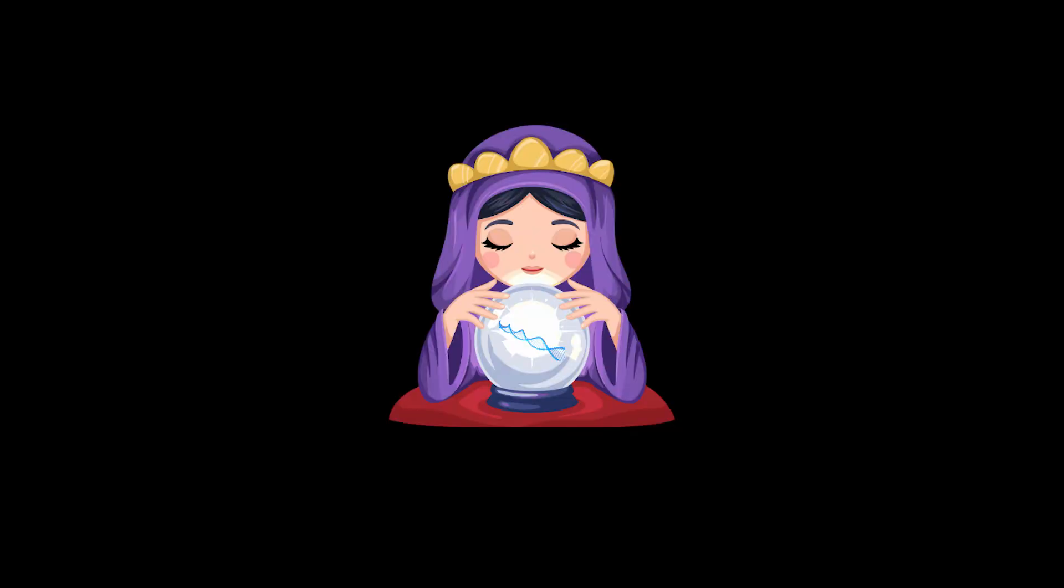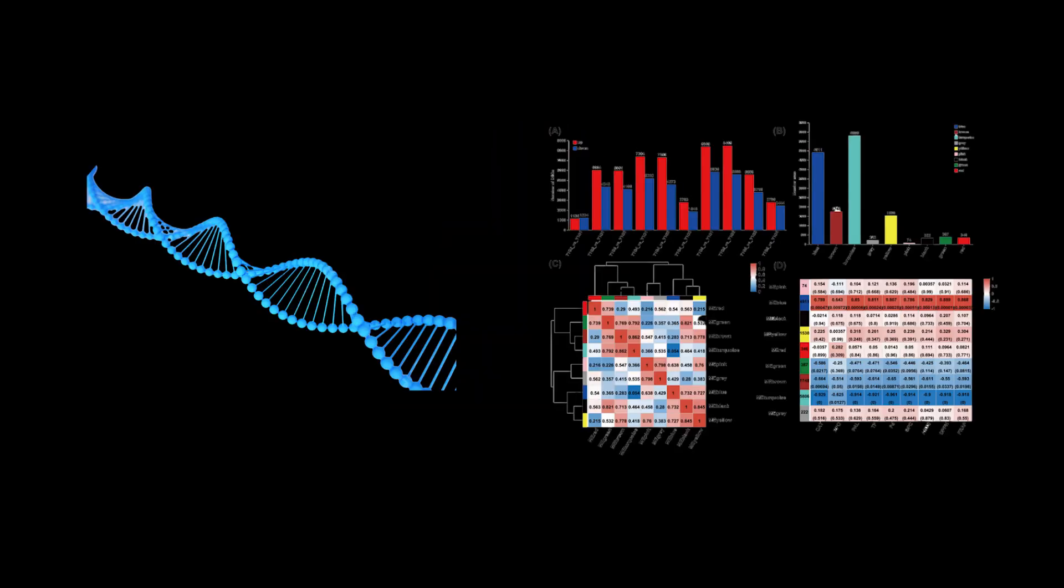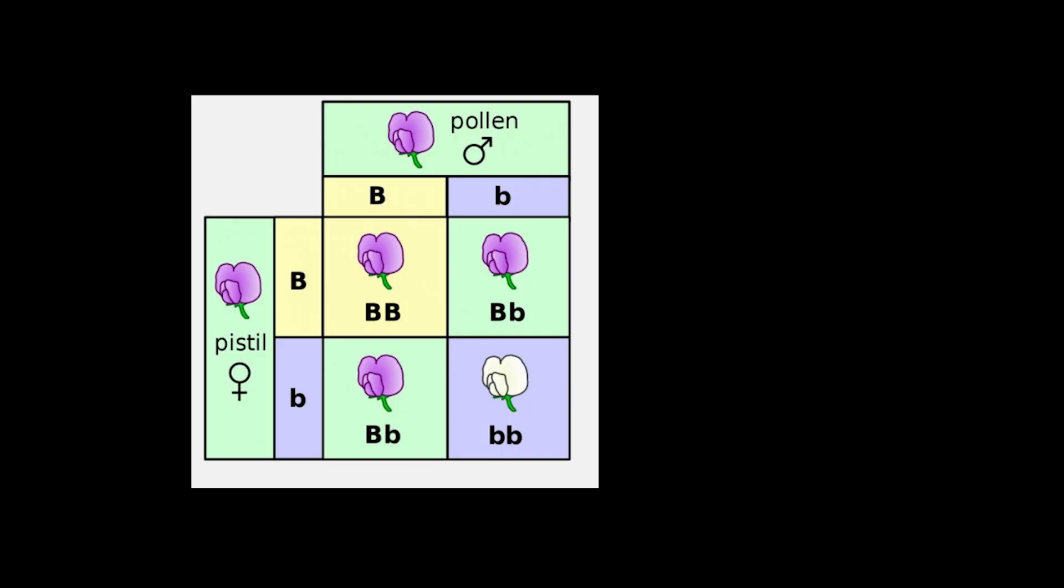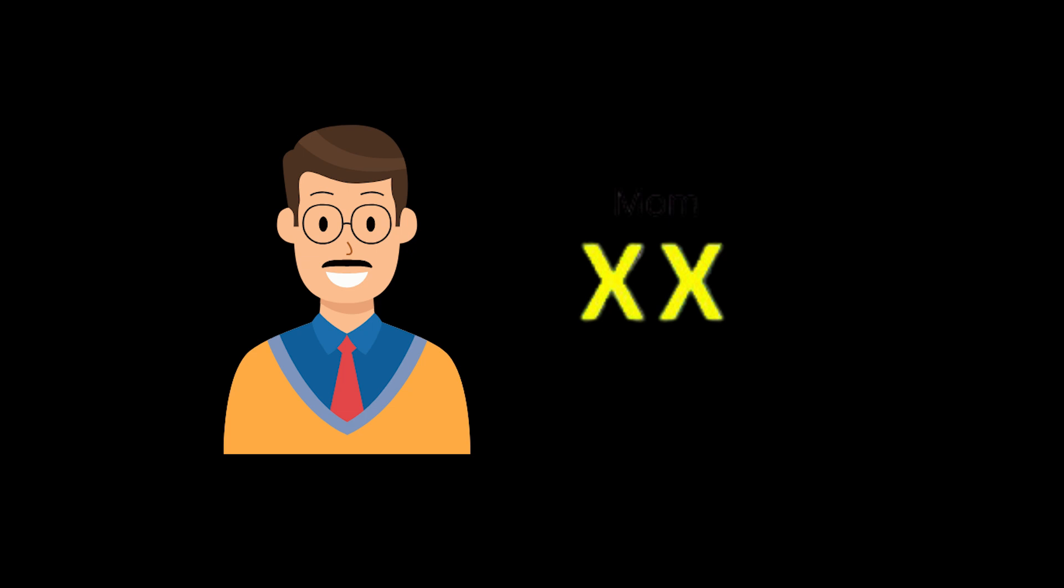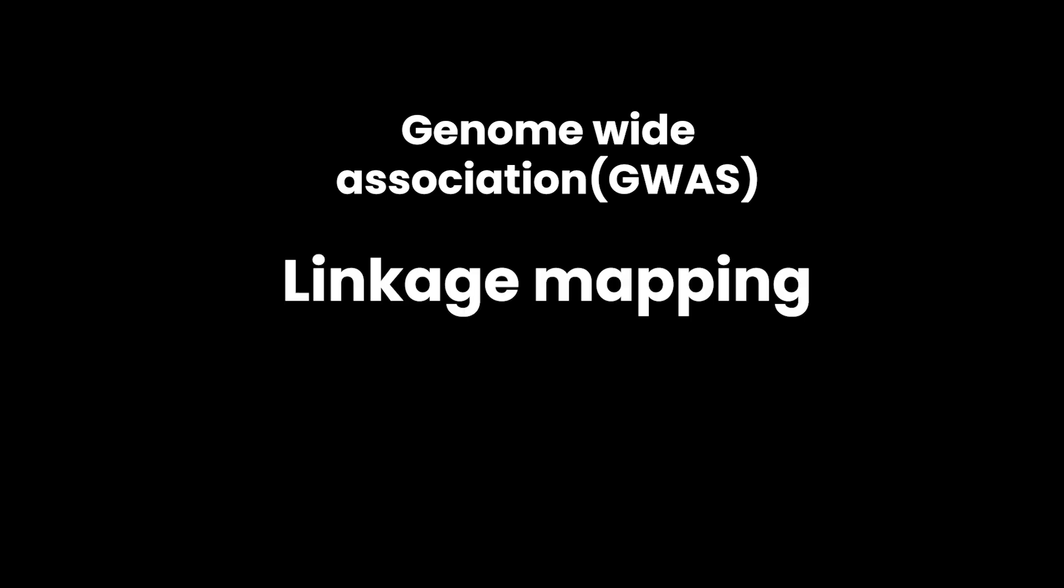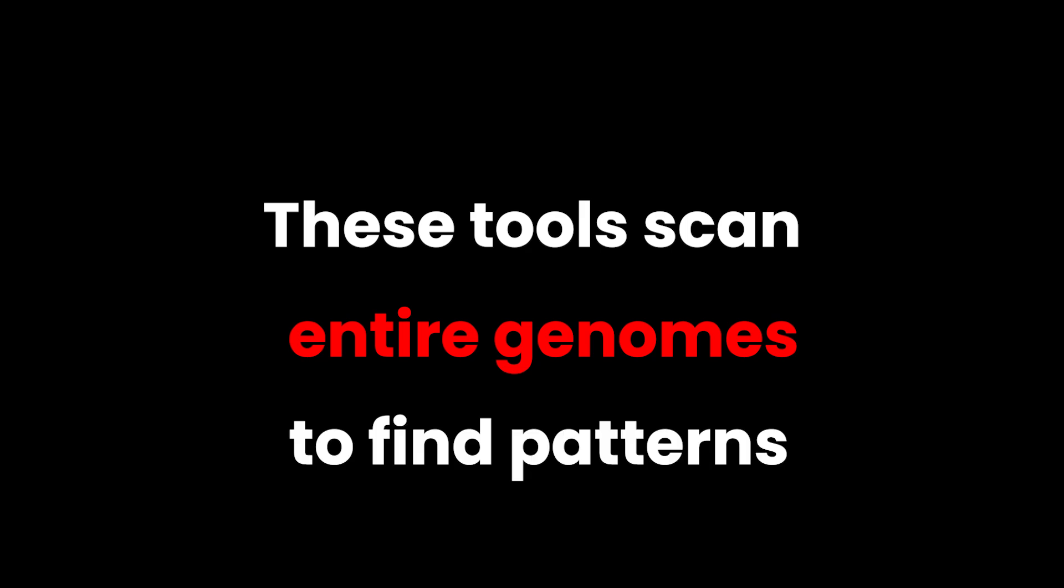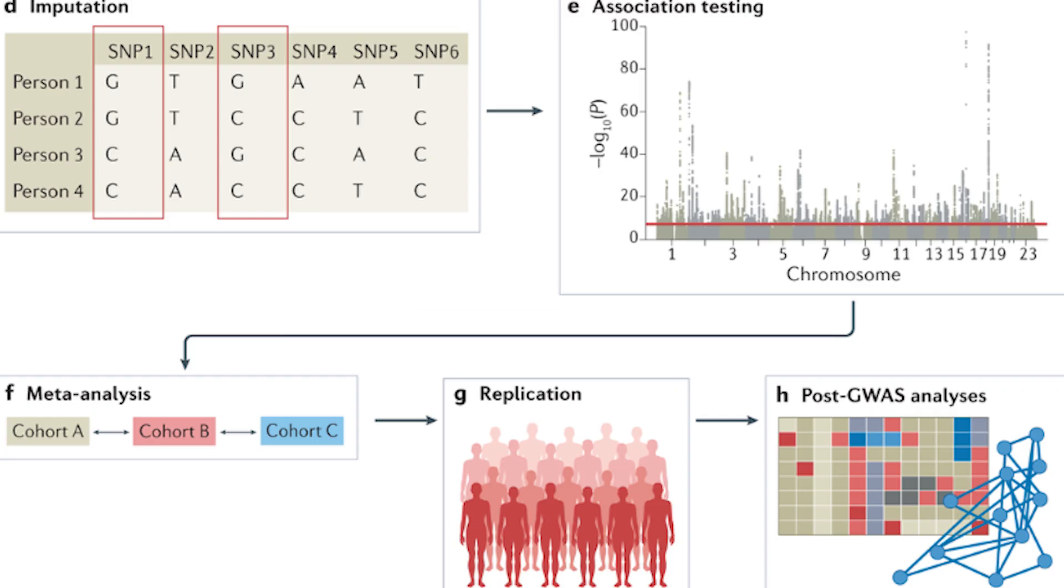But to predict traits, geneticists use statistical models. You might have seen a Punnett square, a simple grid showing inheritance probabilities. It works well for traits controlled by a single gene. But for complex traits, we use bigger tools. Genome-wide association studies, linkage mapping, polygenic risk scores. These tools scan entire genomes to find patterns connecting DNA variations with traits.